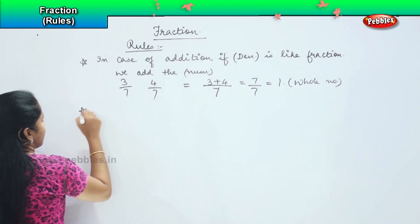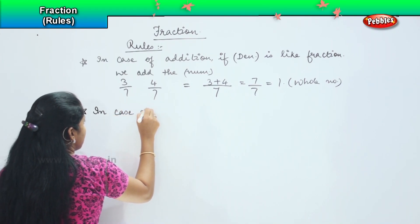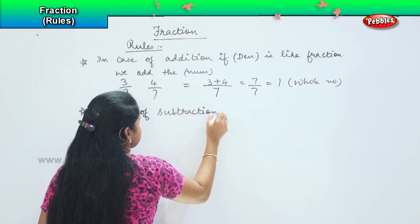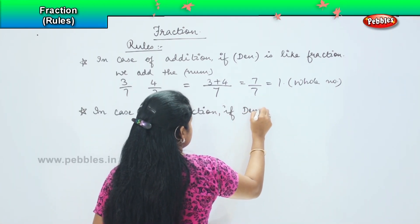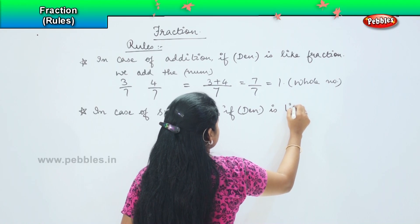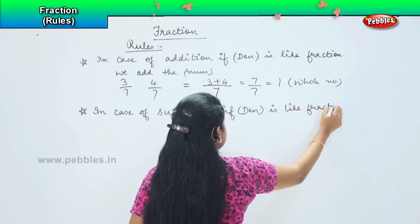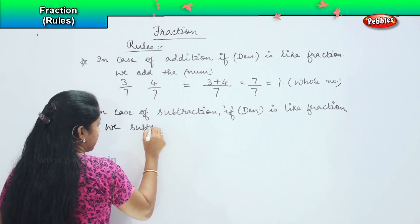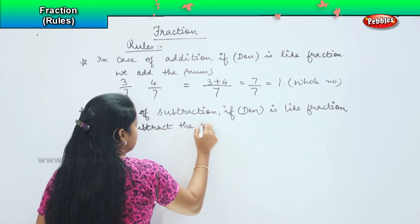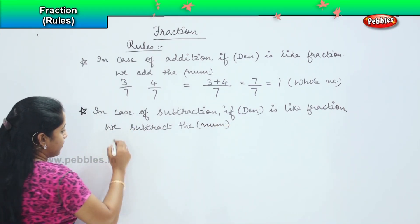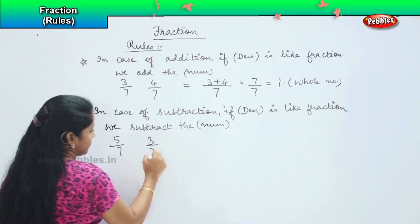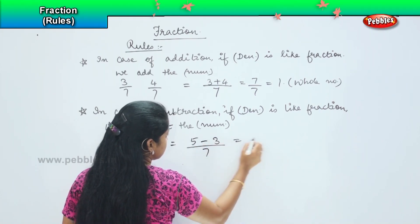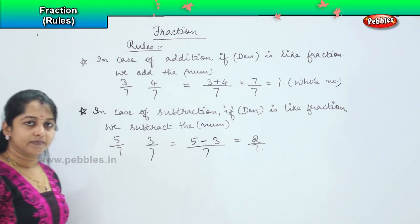The same thing applies for subtraction as well. In case of subtraction, if denominator again is like fraction, we subtract the numerator. How? I have 5 by 7, I have 3 by 7. So how will I do it? Again I will keep numerator, denominator same. 5 minus 3, which is nothing but 2 by 7. Clear?